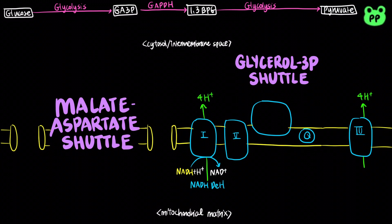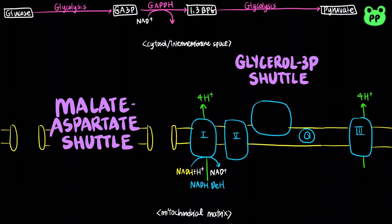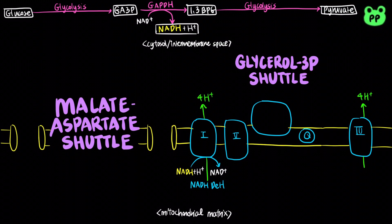However, the inner membrane is not permeable to NADH. Therefore, NADH generated by glyceraldehyde-3-phosphate dehydrogenase, or GAPDH, during glycolysis in the cytosol have to enter the electron transport chain through shuttle systems.